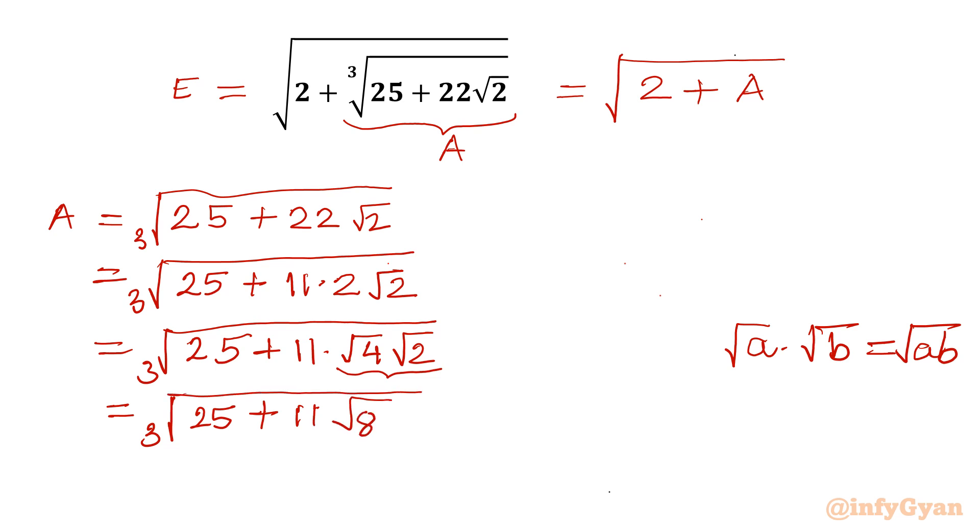Now I will split 11 square root 8. We can write A equal to cube root 25 plus 11 square root 8. Now I will write cube root 25 plus 8 square root 8, keeping A plus B whole cube formula in mind, plus 3 root 8.